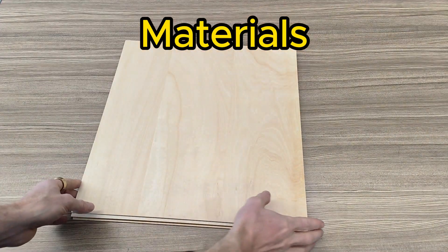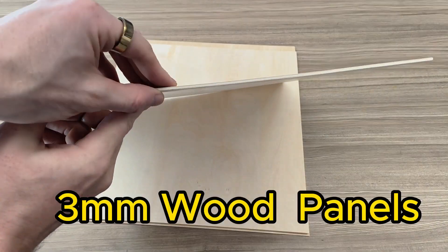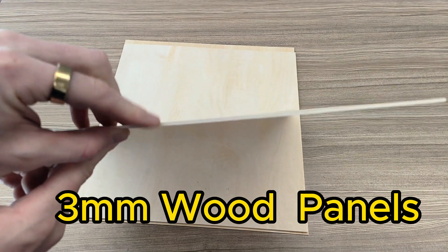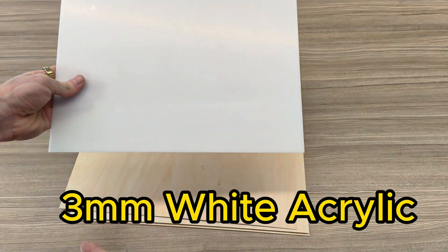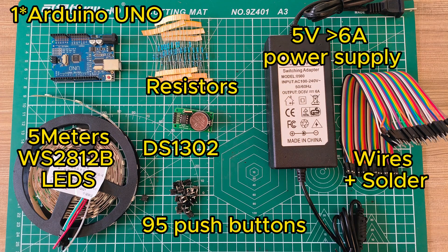So here are all the materials that you need for the project. You need 3mm wood panels and I'm using also 3mm acrylic. And here's a handy list of all the things that you use. It doesn't use too many electronics.